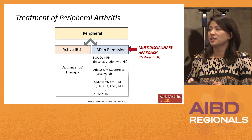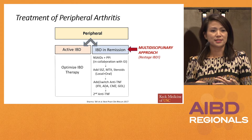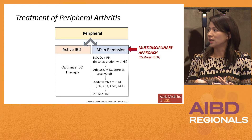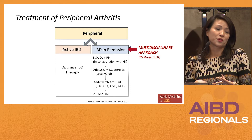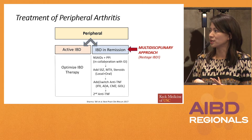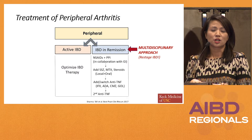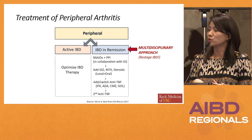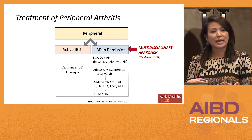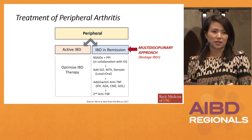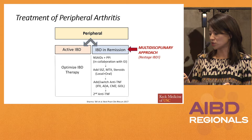If NSAIDs are not helpful or not tolerated, then sulfasalazine, methotrexate, and steroids can be helpful. Local intraarticular steroids are preferred over oral systemic steroids. However, if patients do not tolerate or do not respond to any of these DMARDs, then we're thinking about adding or switching to a biologic — and anti-TNFs here have the most data.